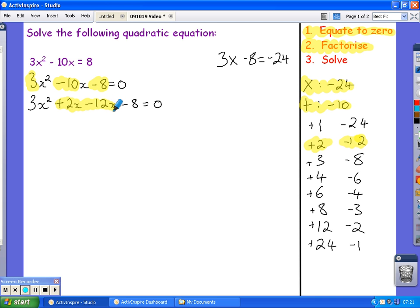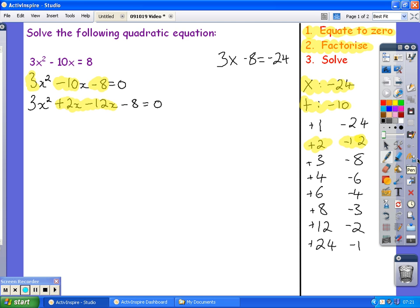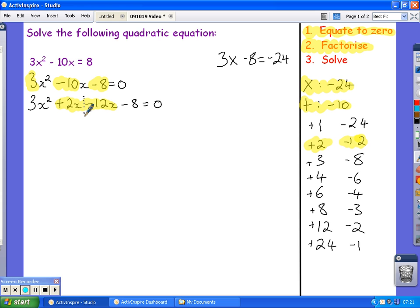OK, now that I've split that 10x up, I need to factorise each half of the equation separately. So, I draw my dividing line in first. Now, I look at the first part, 3x squared plus 2x. My highest common factor of those two terms is x. So, I'll put that outside. To obtain 3x squared, I need to multiply x by 3x. And to obtain 2x, I need to multiply x by 2.